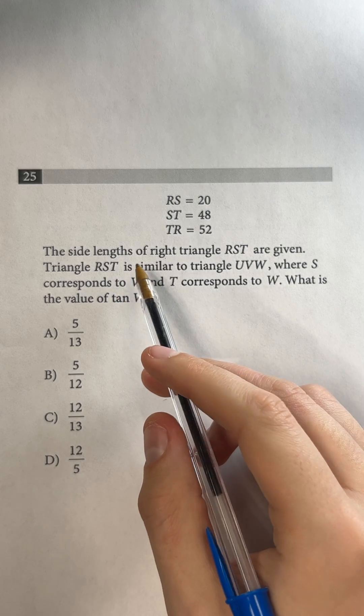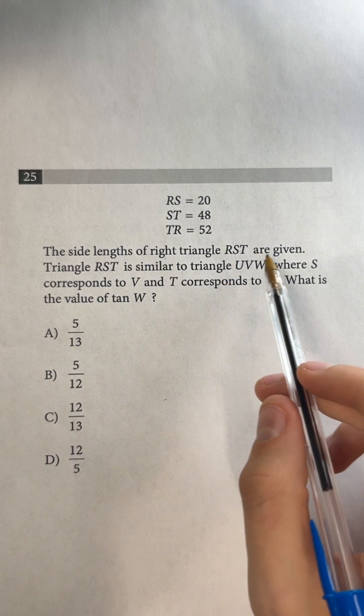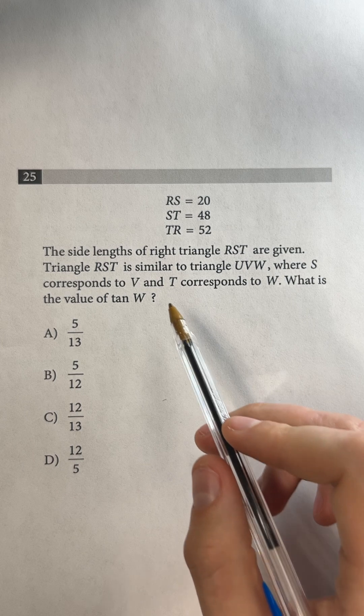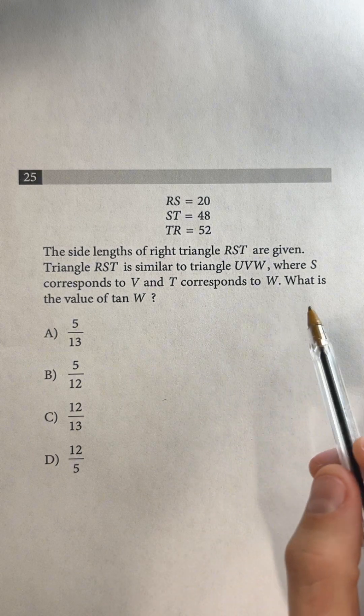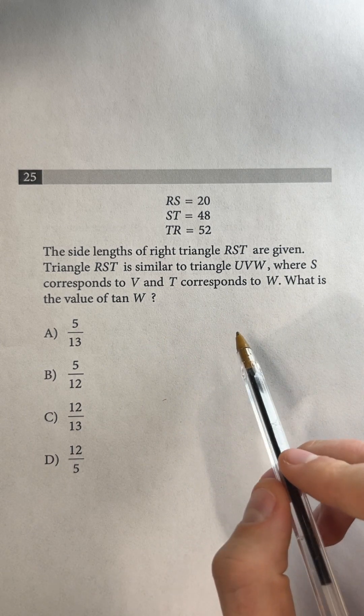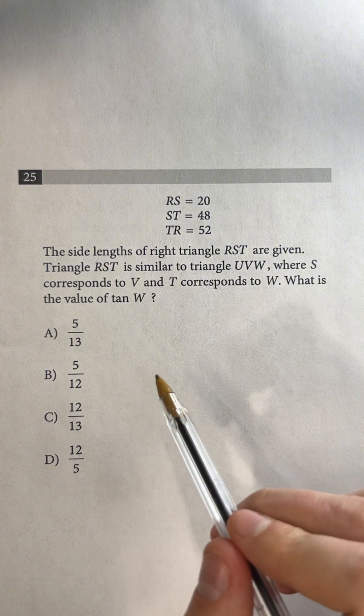Question 25. The side lengths of right triangle RST are given. Triangle RST is similar to triangle UVW, where S corresponds to V and T corresponds to W. What is the value of tan W?